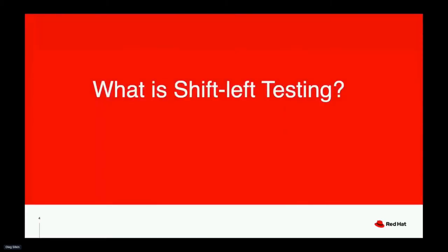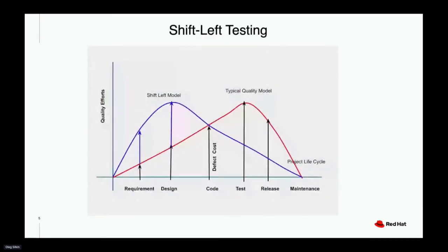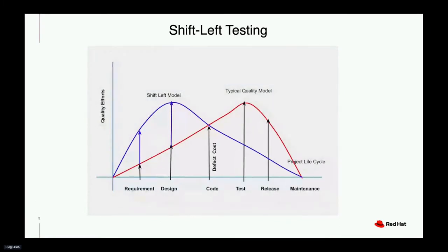So what is shift-left testing? In order to have a clear understanding about shift-left testing, we need to put it into comparison with the typical quality model. As shown in this diagram, in the typical coding model, all the activities are in sequential order starting from requirement, design, code, test, release, and maintenance. The requirement and design are given small attention, which happens very late in the project life cycle. So issues are found very late, which is very expensive to fix.